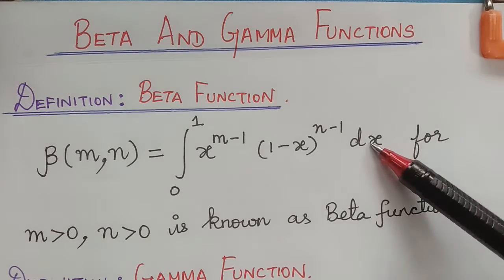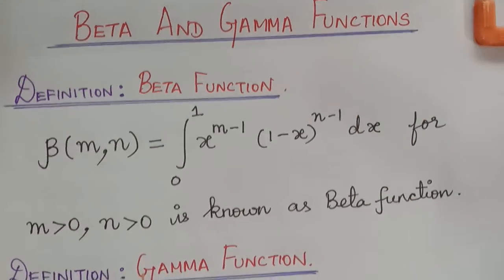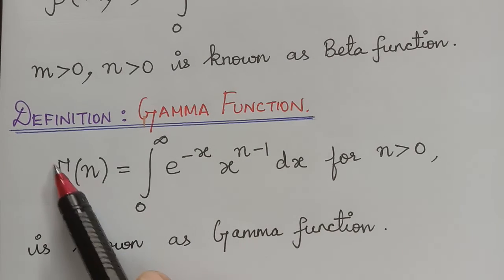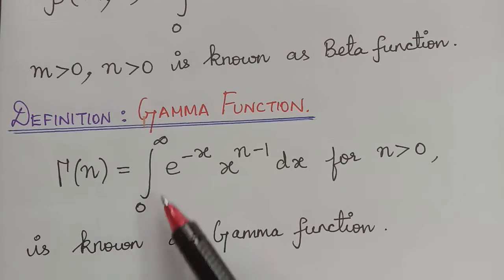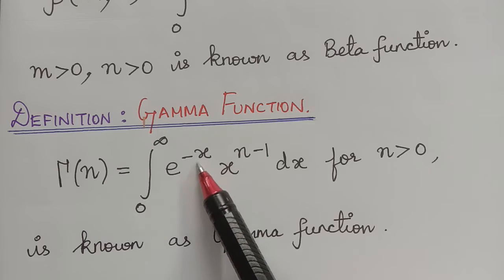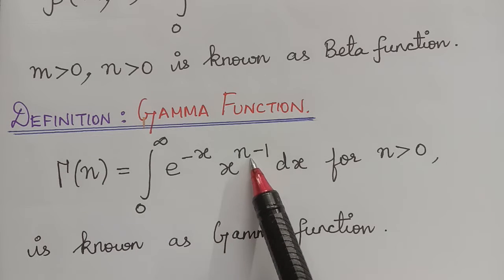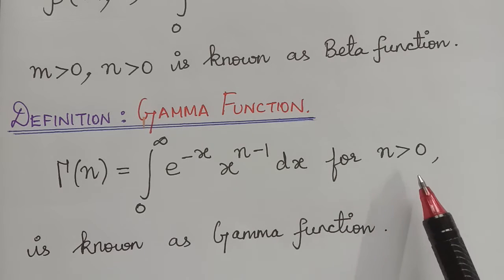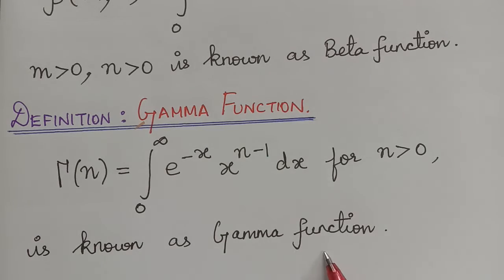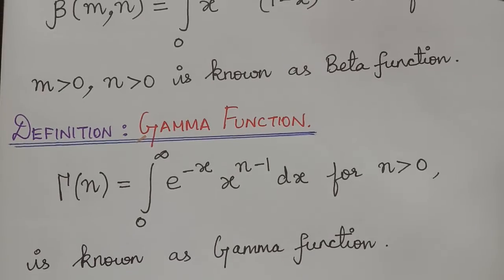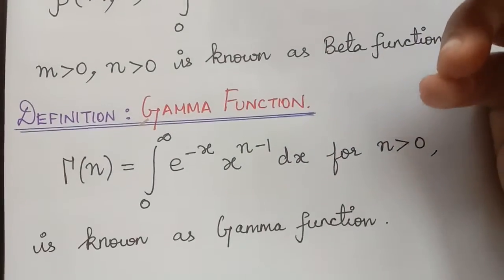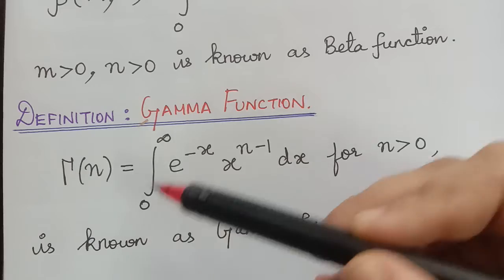The next definition is the gamma function, denoted by gamma of n, and it is equal to the integral from 0 to infinity of e to the power negative x, multiplied with x to the power n minus 1, dx, for n greater than 0. We can notice that the limit for the beta function is 0 to 1, and the limit for the gamma function is 0 to infinity.